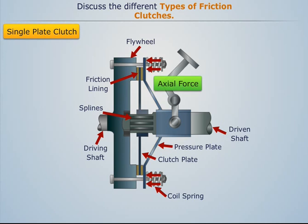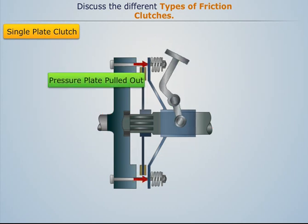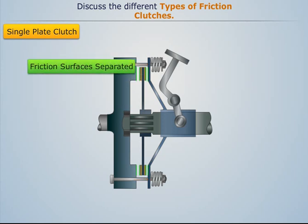For disengaging the single plate clutch, the clutch pedal is pressed, which pulls the pressure plate outside against the force of the spring, thereby releasing the clutch plate and separating the contact surfaces.